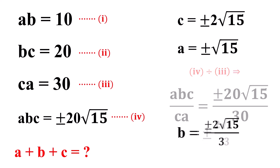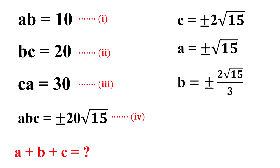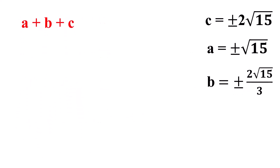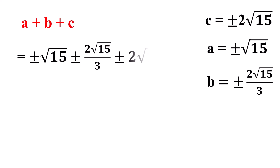Now, substituting the values of A, B, and C, we get A plus B plus C equals plus or minus the square root of 15 plus or minus 2 times the square root of 15 over 3 plus or minus 2 times the square root of 15, equals plus or minus 11 times the square root of 15 all over 3.